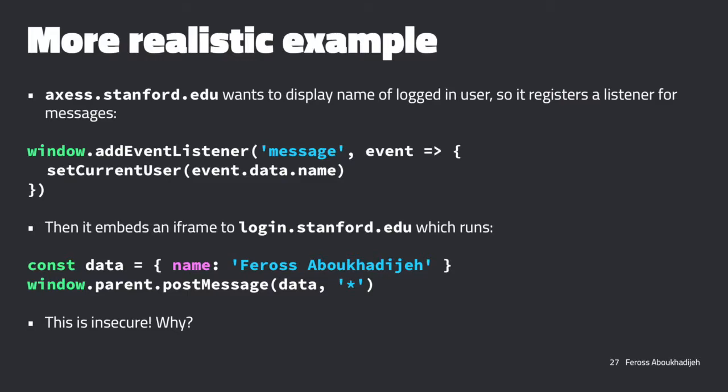The parent would be the window that included this iframe - so in this example, parent would be access. What's going to happen is that event fires and we're able to read the name object. But this is insecure. Does anyone know why this might be insecure?